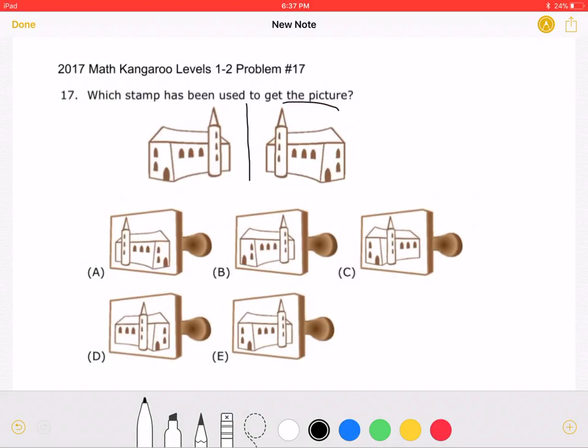So this is the picture, and in order to find the stamp, I reflected the picture over this line of symmetry in the middle to get this over here.